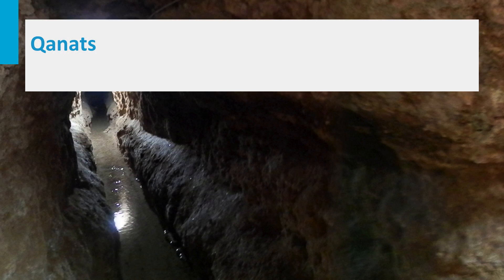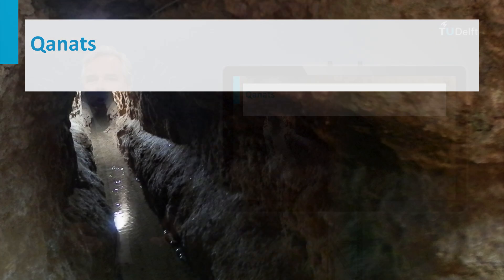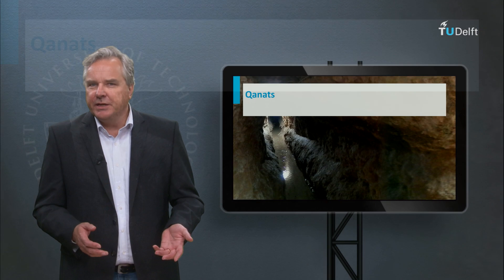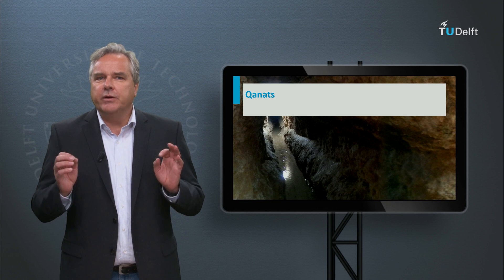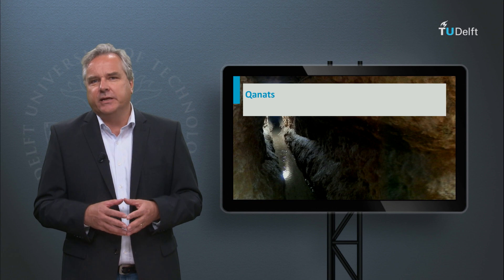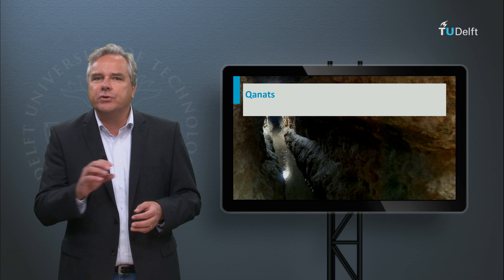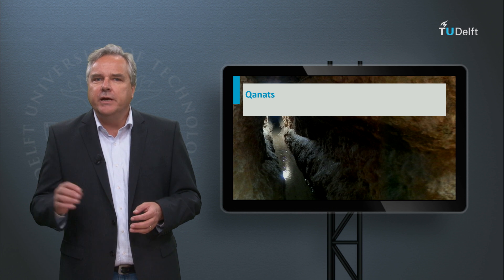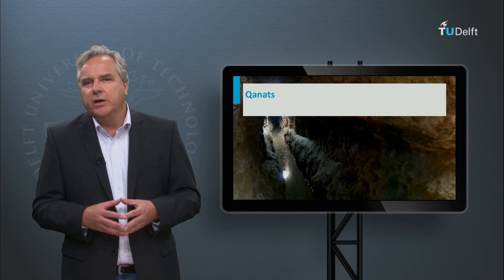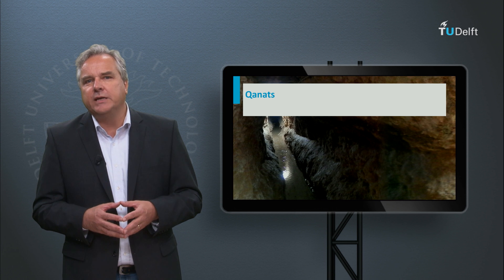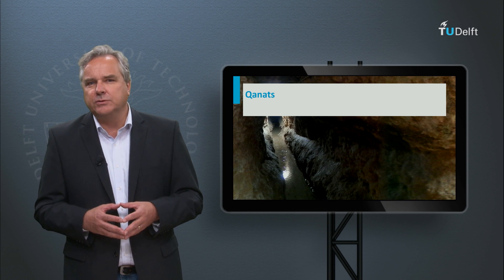People have known this for millennia and have dug wells accordingly. For example, in deserts from the Sahara to the Gobi you can find ancient kanads — underground galleries that capture groundwater. Near the city of Gonabad in Iran, a 2,700-year-old kanad still provides water to a population of 40,000.